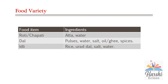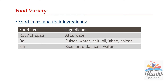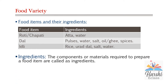Food variety — we all eat different kinds of food at different times. From morning to night dinner, we eat different types of food items. How are these food items prepared? What are the ingredients used? Let's see some food items and their ingredients. For making roti or chapati, we need atta and water, whereas for making dal we need pulses, water, salt, oil or ghee, and spices.